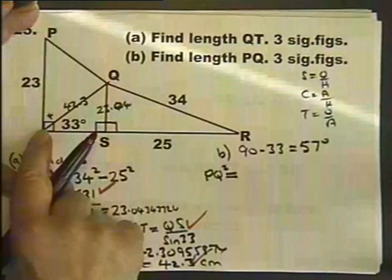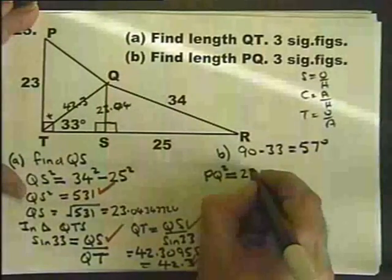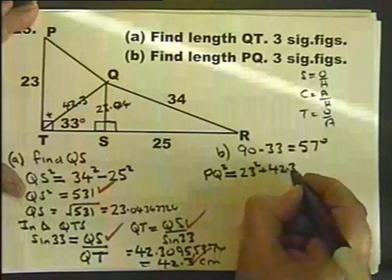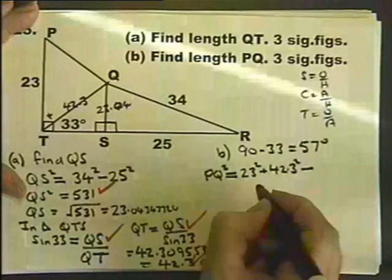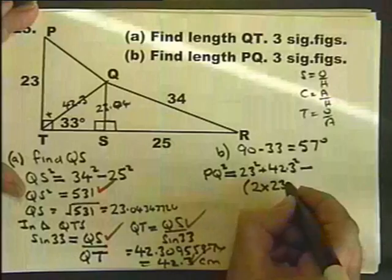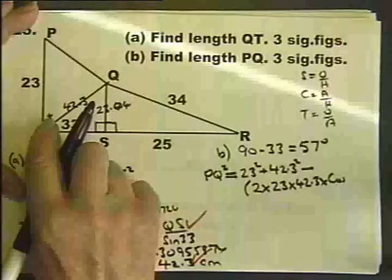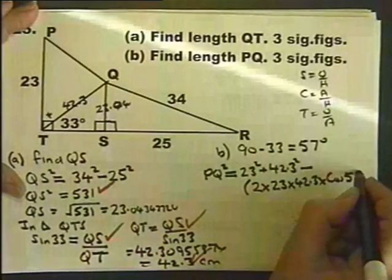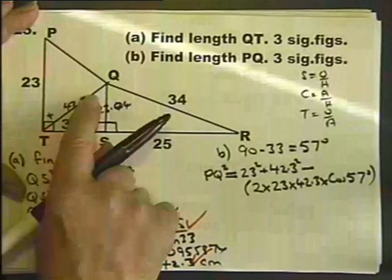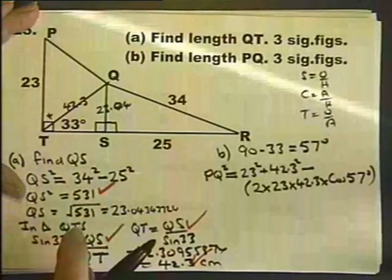squared equals PT squared plus QT squared, and I should write it here but I haven't got enough room. Open brackets, 2 multiplied by 23 multiplied by 42.3 multiplied by the cosine of the angle in between.